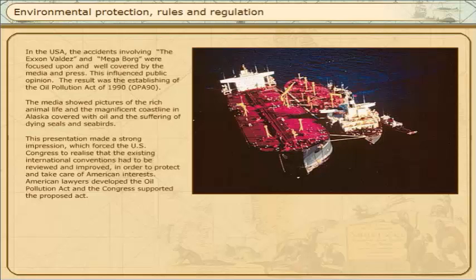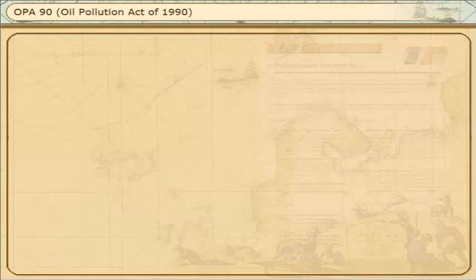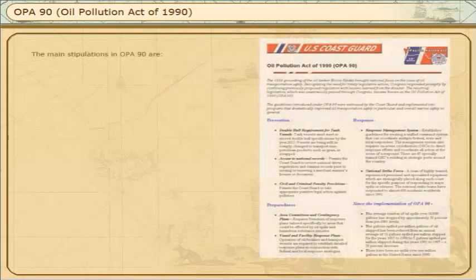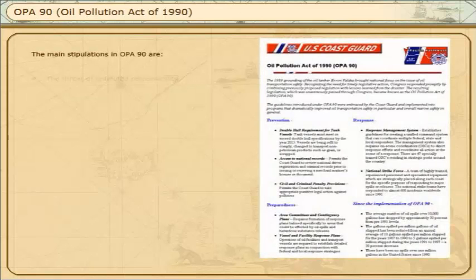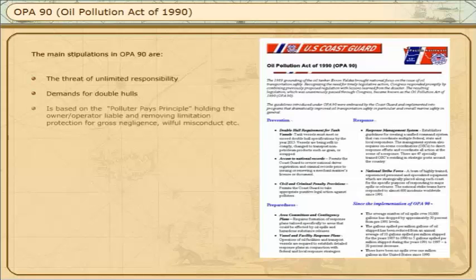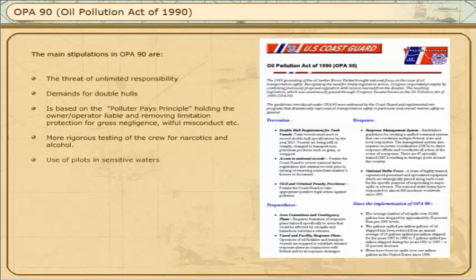American lawyers developed the Oil Pollution Act, and the Congress supported the proposed Act. The main stipulations in OPA-90 are the threat of unlimited responsibility, demands for double hulls, direct access to the means in P&I companies in case of indemnity due to accidents, higher graded demands for the crew regarding narcotics and alcohol testing, and use of pilots in sensitive waters.